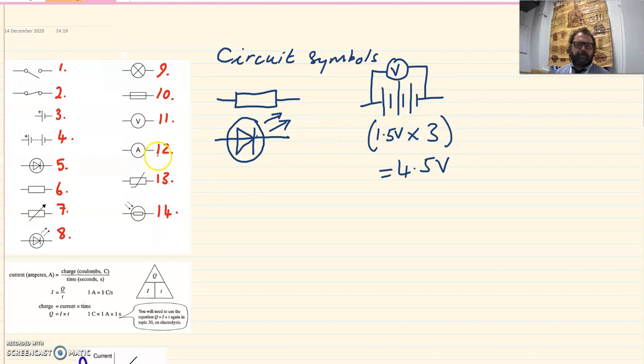The other measurement you need to be able to make in circuits is current with an ammeter, number 12, and remember ammeters go in line with the circuit, they are connected in series. I'm drawing a series circuit here, with two light bulbs connected with an ammeter to measure the current, a voltmeter to measure potential difference in parallel, and an ammeter to measure the current flowing round the circuit.